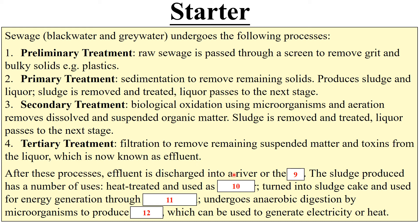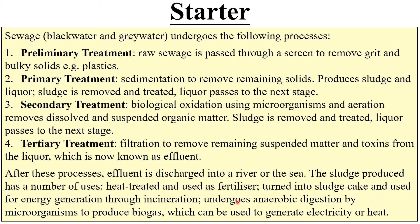After these processes, effluent is discharged into a river or the sea. The sludge produced has a number of uses: heat treated and used as fertilizer; turned into sludge cake and used for energy generation through incineration; or it undergoes anaerobic digestion by microorganisms to produce biogas, which can be used to generate electricity or heat.